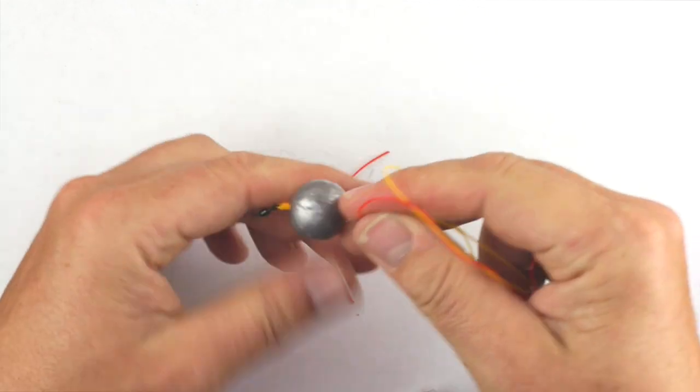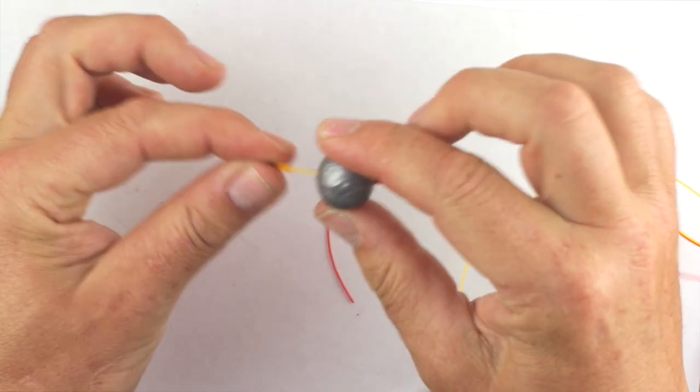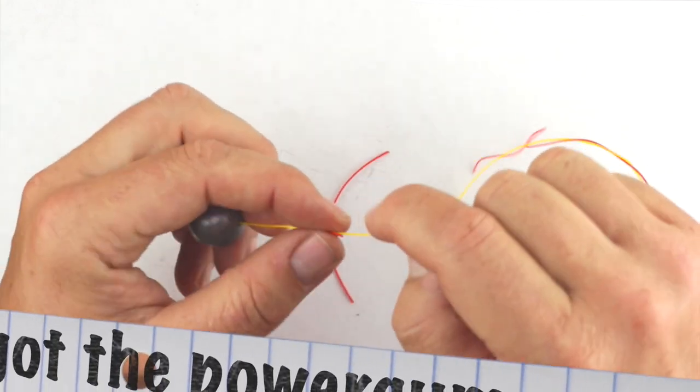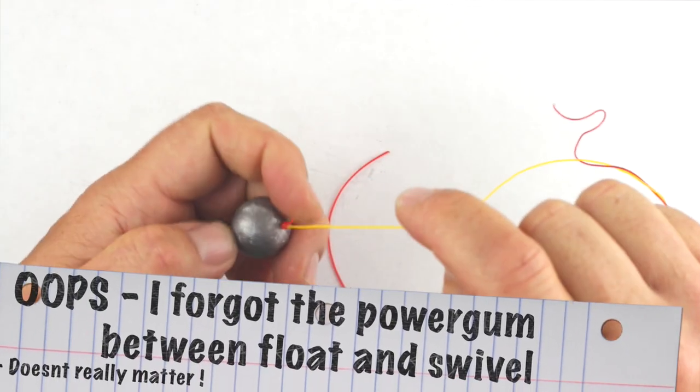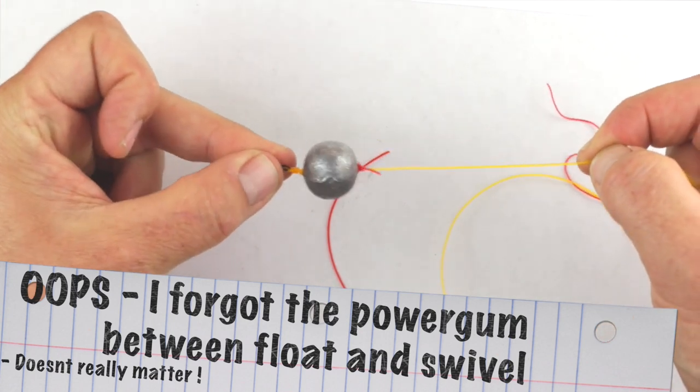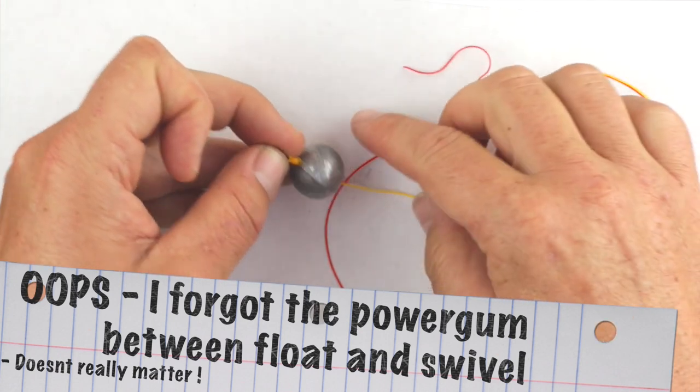And that's it, really. I see some people run the line through it and come back round again, but then you're weakening your main line there. That way keeps things nice and simple.